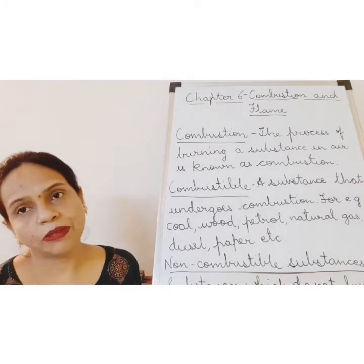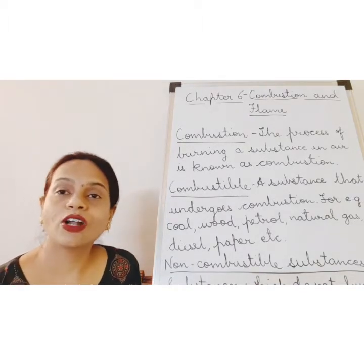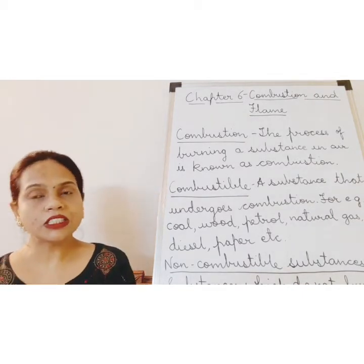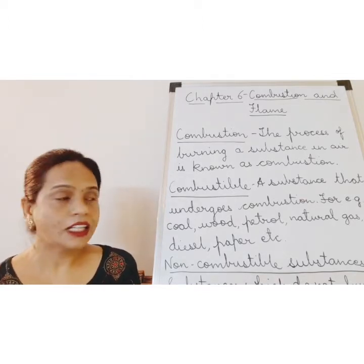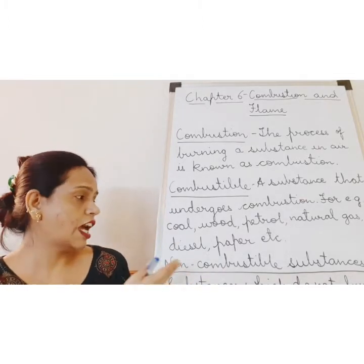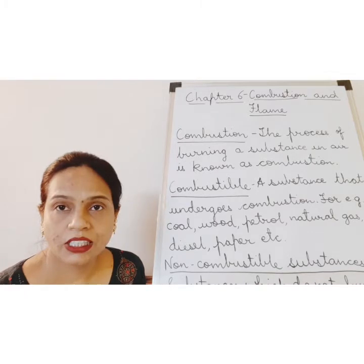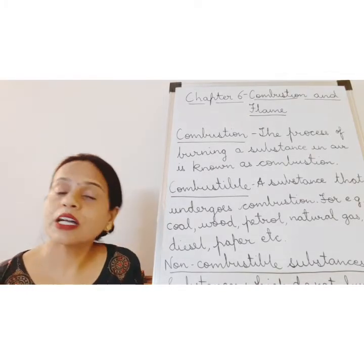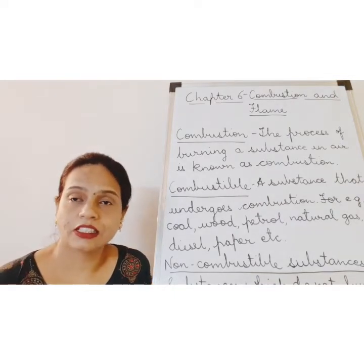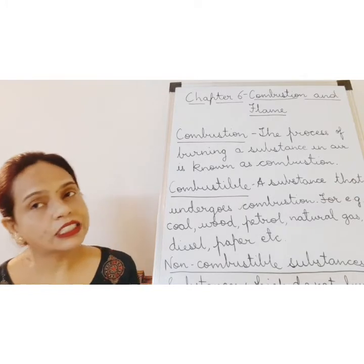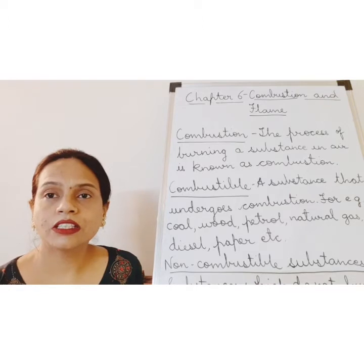When burning is taking place, something is getting burnt. That substance which is getting burnt is called a combustible substance. Combustible substances can be wood, paper, dry leaves, diesel, and of course all the fuels. Now there are certain substances like stones, metals, and glass which do not burn. These substances that do not burn are called non-combustible substances.